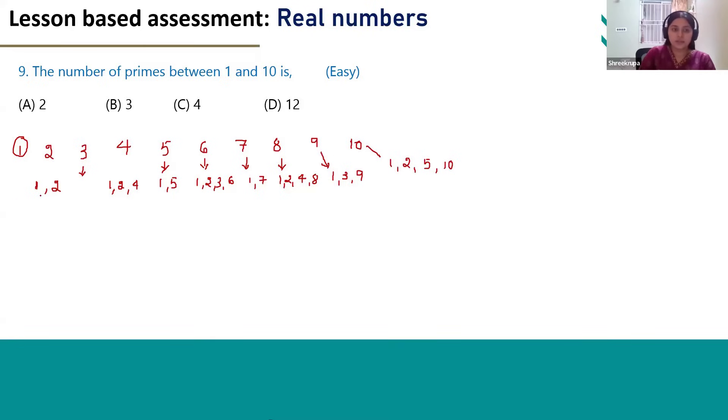So how many numbers are there? We cannot consider 1 as a prime number, but 2, 3, 5, and 7.